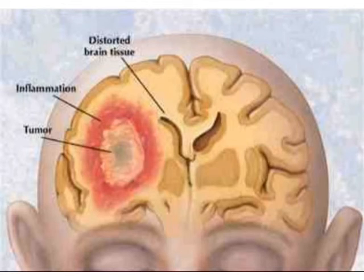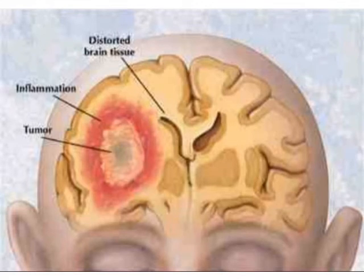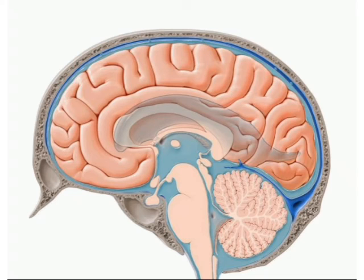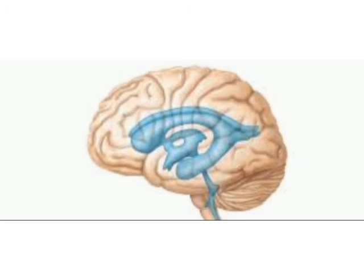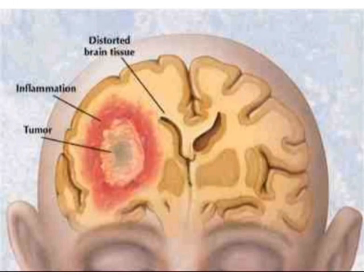The meninges are the three membranes that envelope the brain and spinal cord. The outer layer is a tough white fibrous connective tissue, while the middle layer is thin with numerous thread-like strands, similar in appearance to a cobweb. The final layer is filled with cerebrospinal fluid along with blood vessels.